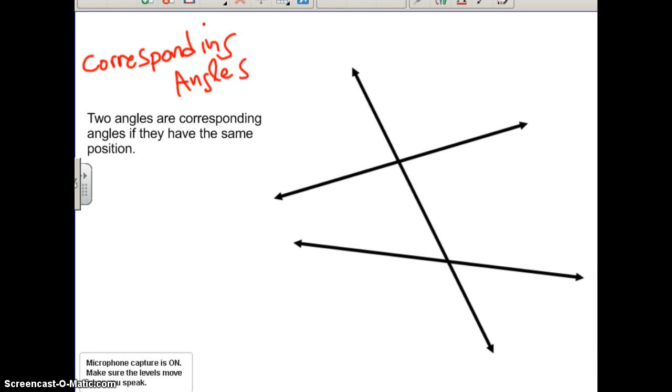So let's talk about angle one's position, but we're now dealing up in this top section. Notice that angle one is in the top right position. So the corresponding angle down below would be down here because this is also in the top right position. We would say that angles one and two are corresponding.